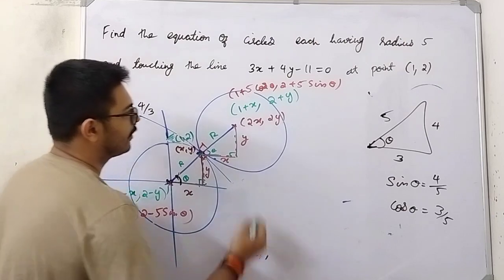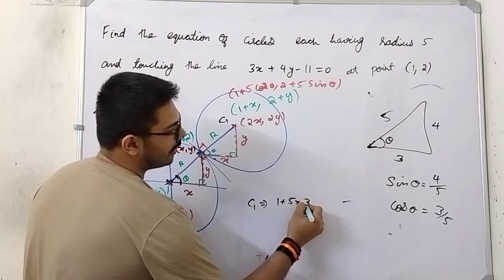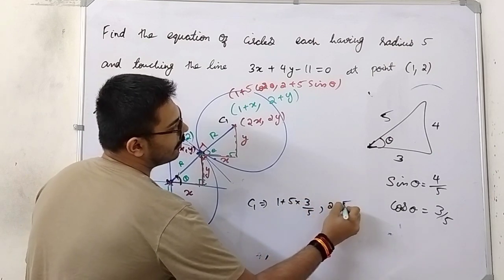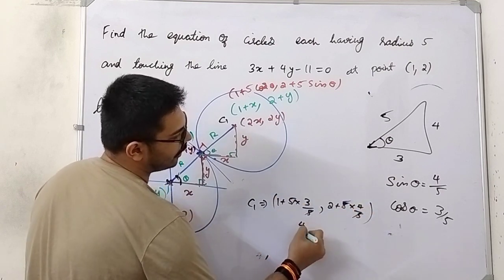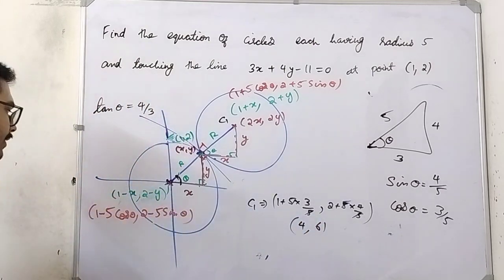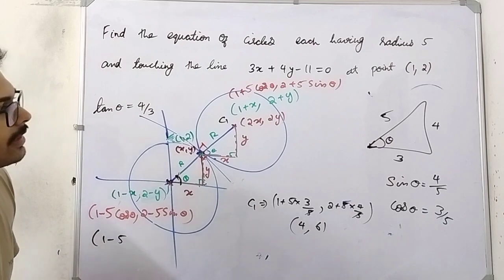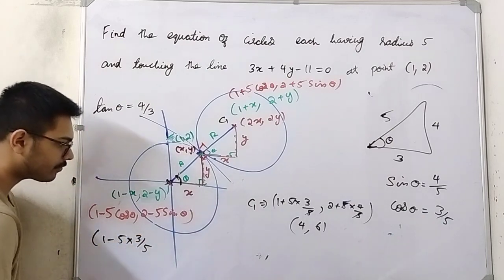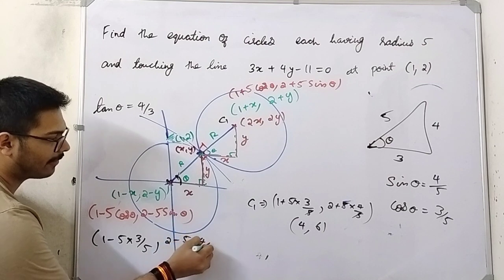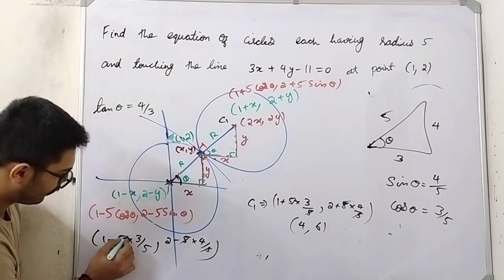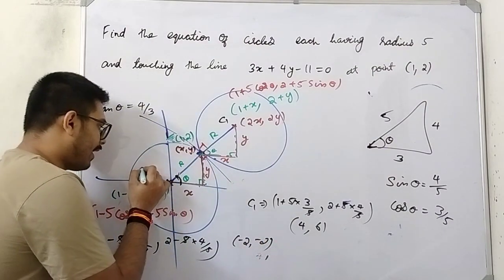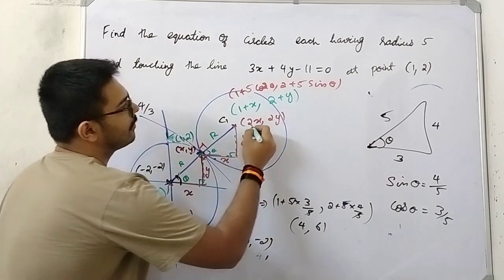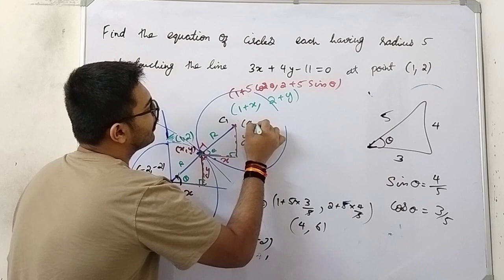What is the center C1 of the first circle? C1 = (1 + 5·(3/5), 2 + 5·(4/5)) = (1 + 3, 2 + 4) = (4, 6). Similarly, C2 = (1 − 5·(3/5), 2 − 5·(4/5)) = (1 − 3, 2 − 4) = (−2, −2). So one circle has center (−2, −2) and the other has center (4, 6).